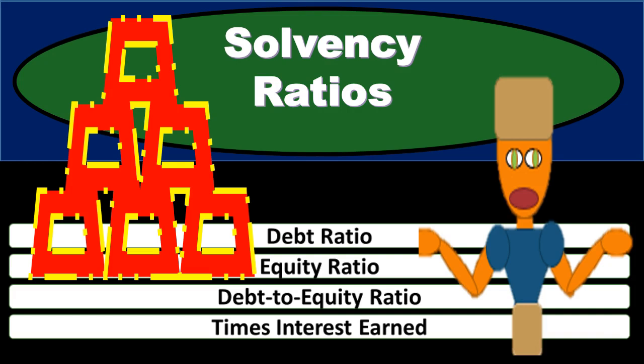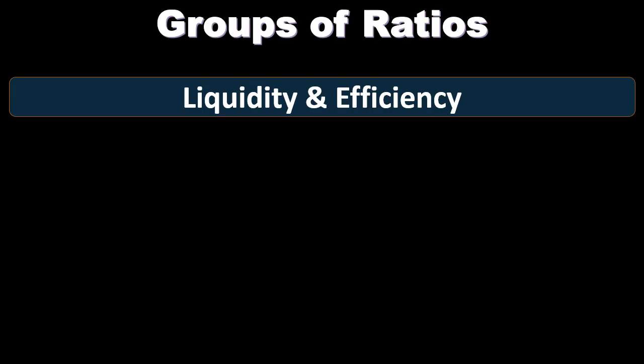In this presentation we will take a look at and practice calculating solvency ratios. As we consider ratio analysis, we want to be able to group the ratios by category, making it easier to know what those ratios are doing, communicate that to other people, and it's going to be easier for test questions — a common test question being to group the ratios into categories.